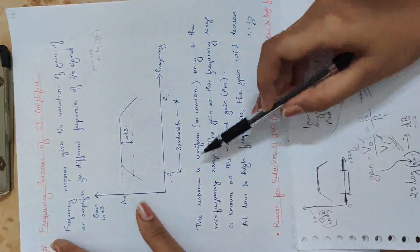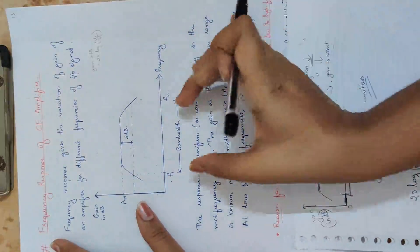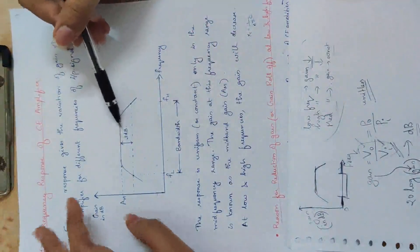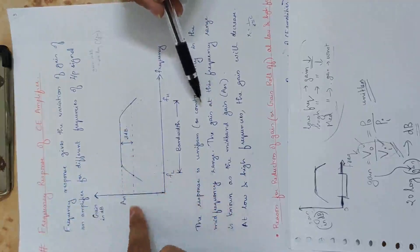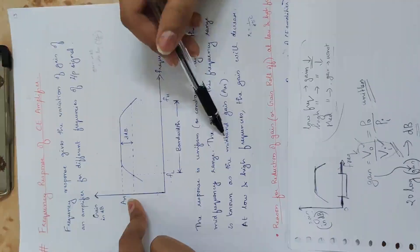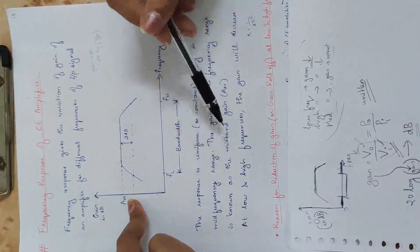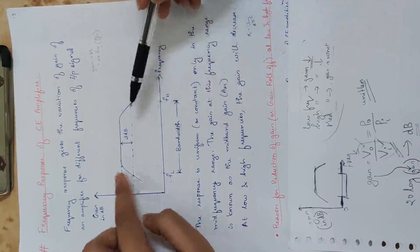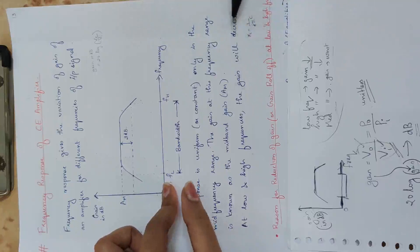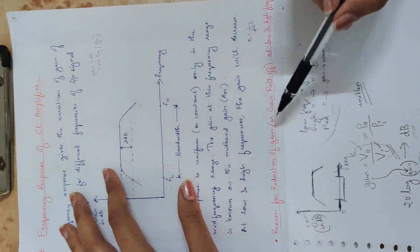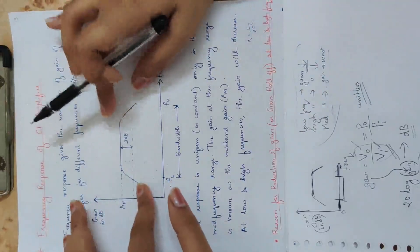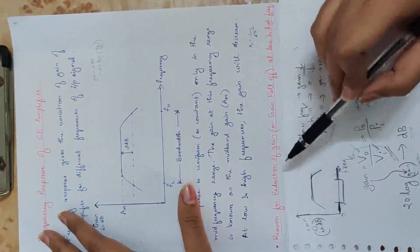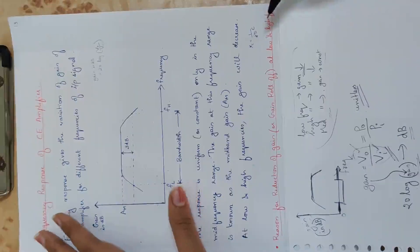The response is uniform or constant only in the mid-frequency range. This constant gain A-m is called the mid-band gain — the gain at this frequency range is known as mid-band gain. At low frequency and at high frequency, the gain will decrease. So the reason for reduction of gain at low frequency and high frequency will now be discussed.